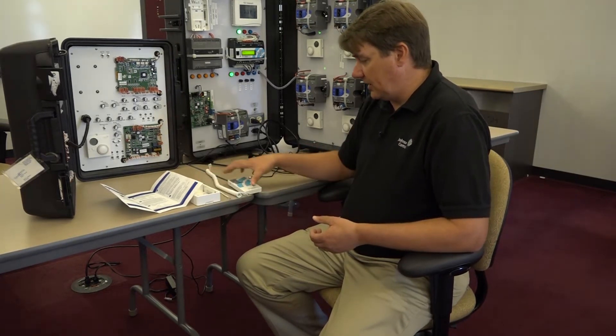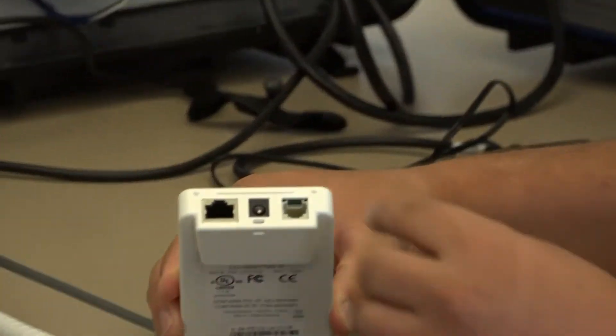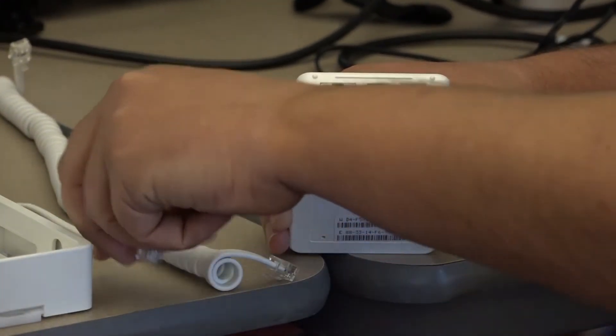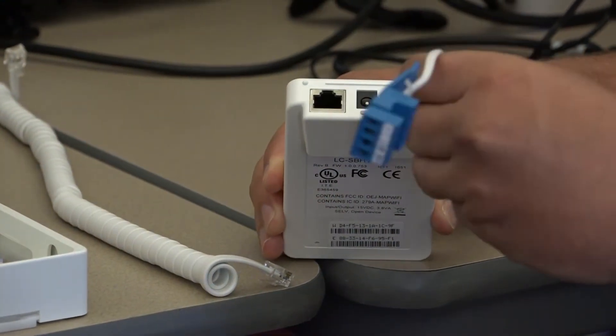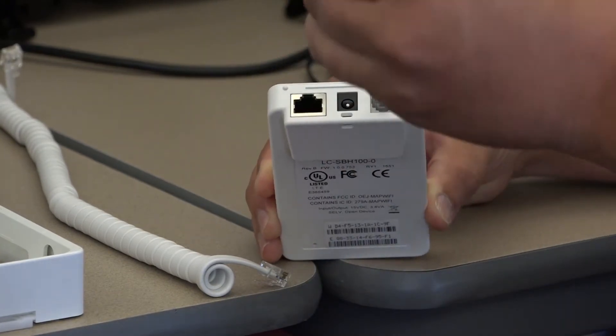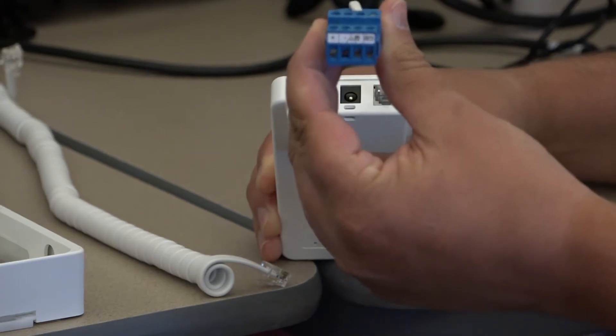So the Smart Building Hub has three different ports on it. The first port is for your MSTP connection. You can take either the permanent MSTP connection and connect it up and then wire it into